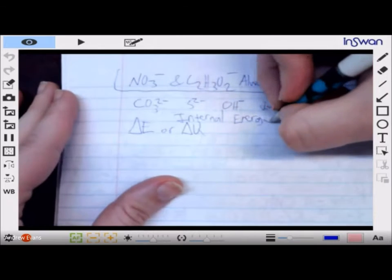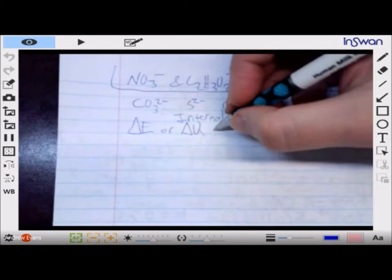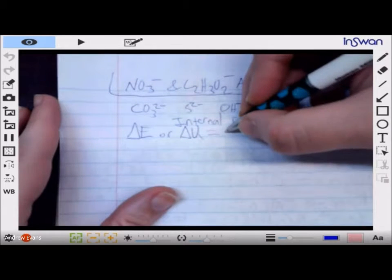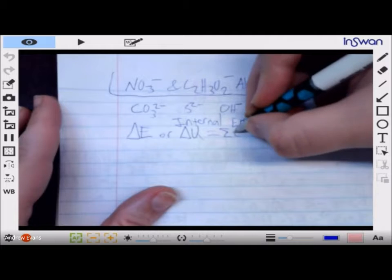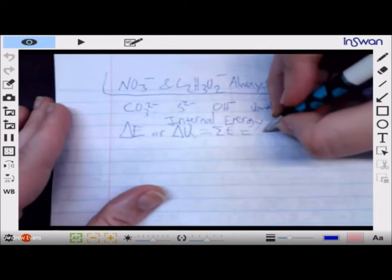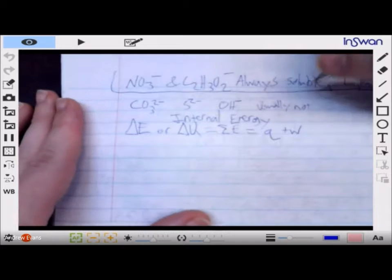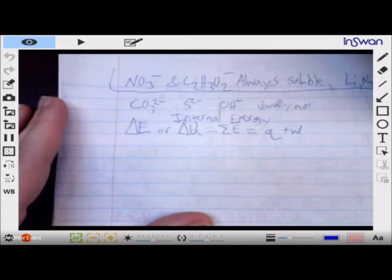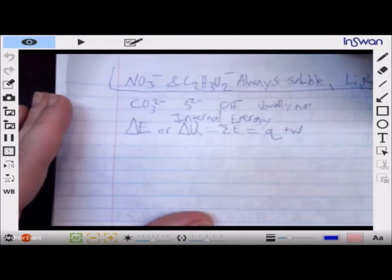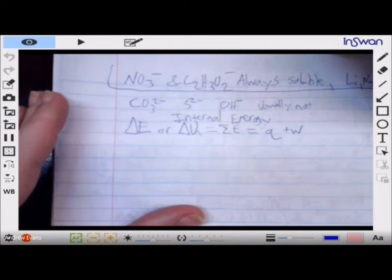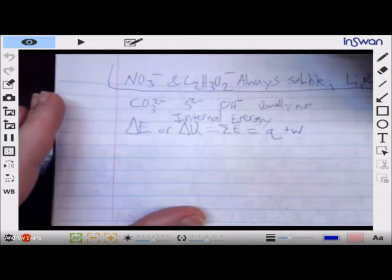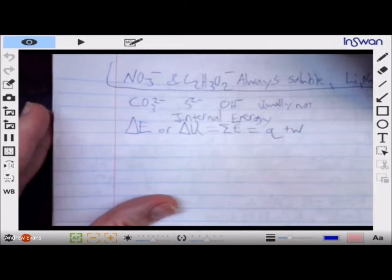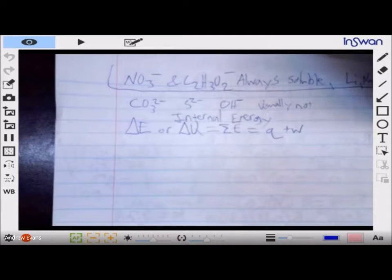sum of all types of energy. Typically we look at it as heat plus work because in most situations that's where the majority of the energy is coming from. We're not looking at a molecule traveling at such and such a speed with such and such a mass - we're not looking at kinetic energy except for oxidation reduction reactions.